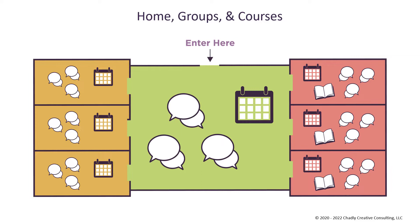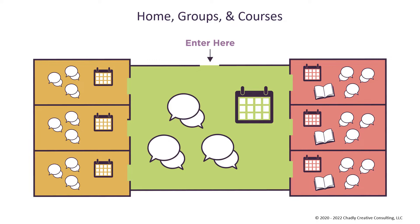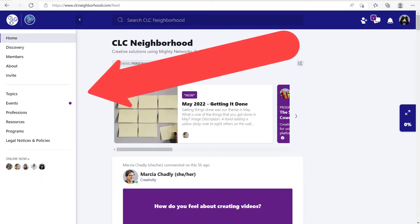You can think of a topic as a cabinet. There's a cabinet in each of these rooms, and when you open that cabinet for that particular topic, you see only the posts or events that are tagged with that topic. The navigation bar in Mighty Networks provides access to your groups and to your courses.